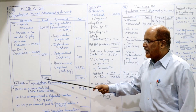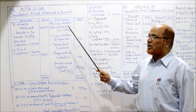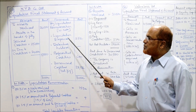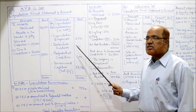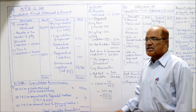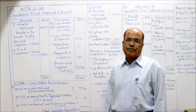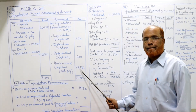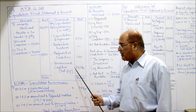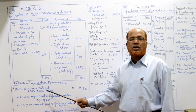Now liquidator's remuneration must be calculated in working notes. Liquidation expenses 252 are given. Debenture holders are not in this problem. Preferential creditors 600 are given. For unsecured creditors, we must first check whether the company is solvent or insolvent — that is determined in working note number 2 — and then we can find the remuneration on payment to unsecured creditors.